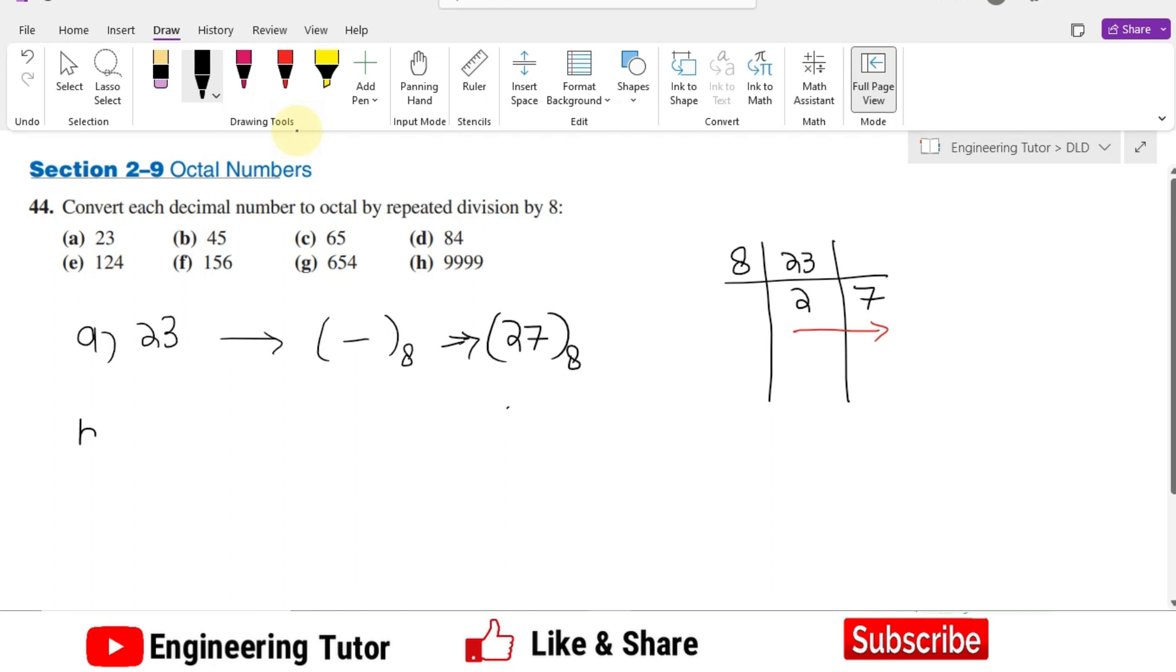Similarly, for part B where I have 45 in decimal, in order to convert it to its octal counterpart, let me use the same procedure. Writing here 45.